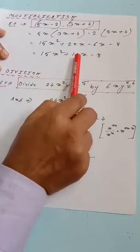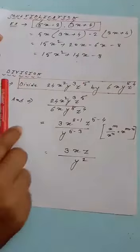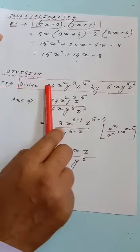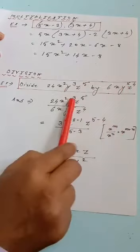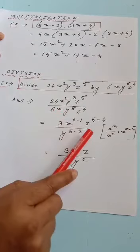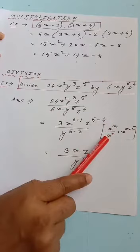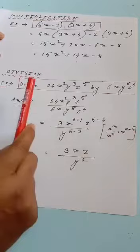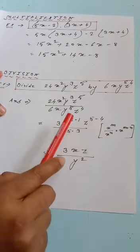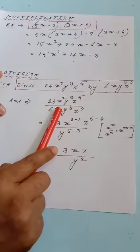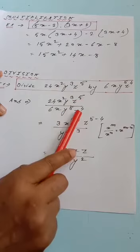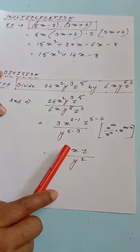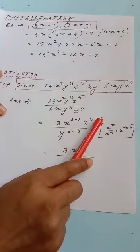Next is division. Divide 24x²y³z⁵ by 6xy⁵z⁴. We apply the indices formula: xᵐ ÷ xⁿ = xᵐ⁻ⁿ. Dividing 24 by 6 gives 3. Then x²÷x¹ = x¹, y³÷y⁵ = y⁻², z⁵÷z⁴ = z¹. So the answer is 3xz / y².